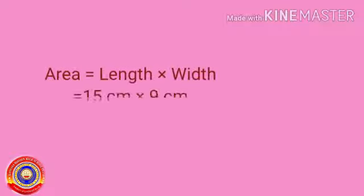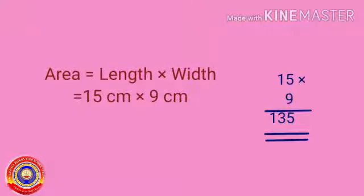Now we have to find the area. Area is equal to length into width, that is 15 centimeters into 9 centimeters, which is equal to 135 square centimeters.